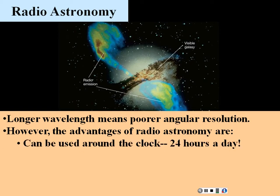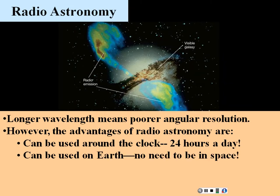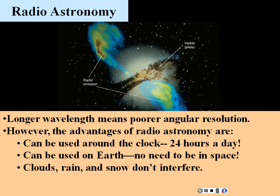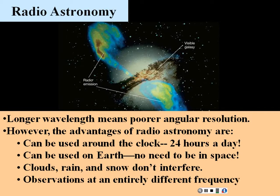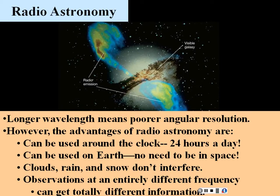Advantages of radio astronomy: you can use it around the clock, 24 hours a day. You don't have the atmospheric effects that optical telescopes suffer. So it can be used on Earth — no need to be in space for radio astronomy. Weather doesn't interfere: clouds, rain, snow are no problem. And you can collect at different radio frequencies, getting different information from entirely different frequencies across the whole radio range.